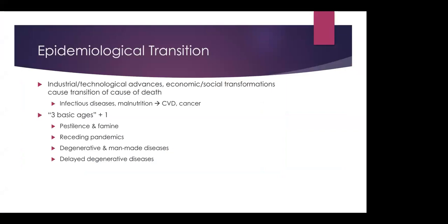The epidemiological transition is due to industrial and technological advances, and economic and social transformations. This represents a shift from infectious diseases and malnutrition being the leading causes of death, to now cardiovascular diseases and cancer. There's an author referenced in this paper who cites three basic ages, and a fourth author who adds a fourth stage: pestilence and famine, receding pandemics, degenerative and man-made diseases, and delayed degenerative diseases.